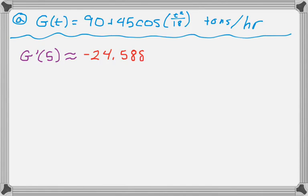And it should give you negative 24.588, and then that's going to be in, it started out at tons per hour, so it's going to be tons per hour per hour, or tons per hour squared.